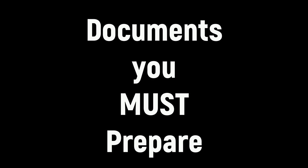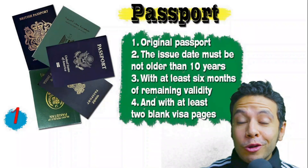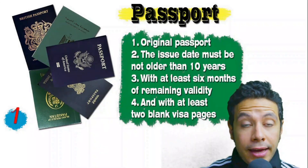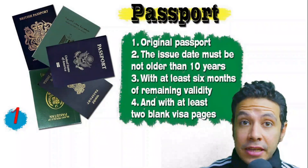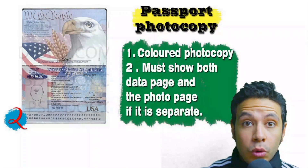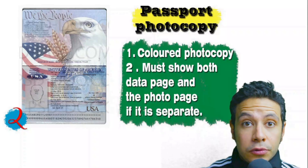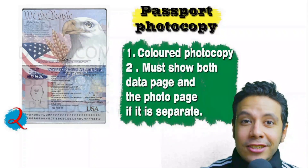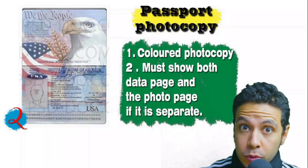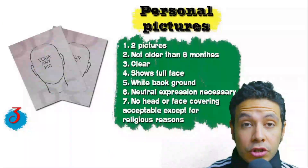Speaking about your passport: it must be original, not older than 10 years, with at least six months of remaining validity and at least two blank visa pages for stamps. You will also need a photocopy — possibly one or more, preferably colored — showing both the data page and the photo page. In some cases you may need to photocopy every single page.